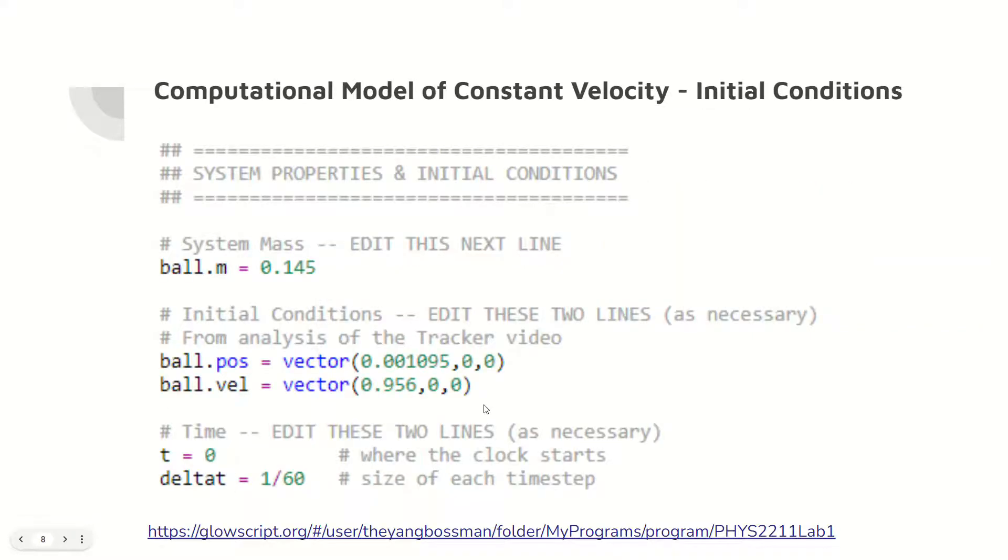The important initial conditions for the computational model coded in vPython include the change in time, the initial position of the ball, and the initial velocity of the ball. These initial conditions were obtained from the tracker data and are shown in the previous slide on tracker data analysis.